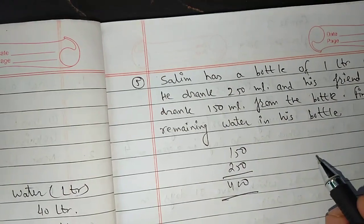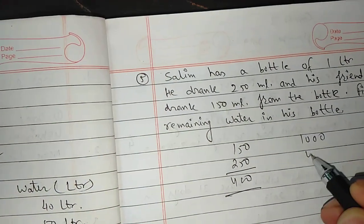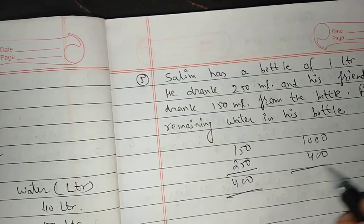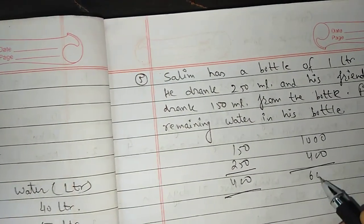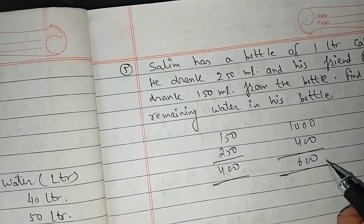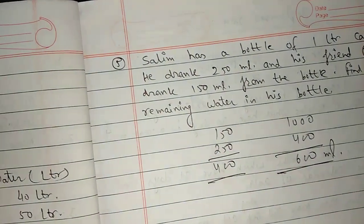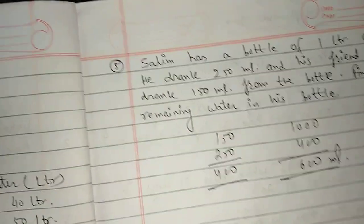And how much water has been saved? 1,000 minus 400 ml. How much? 600 ml.